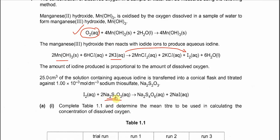There are three reactions involved. First, we get the moles of thiosulfate. From the moles of sodium thiosulfate we get the moles of iodine, then use the moles of iodine to get the moles of manganese(III) hydroxide, and finally the moles of oxygen. Once we have moles of oxygen we can calculate the concentration.